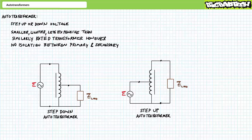An auto transformer is a special type of transformer with only one winding, and that single winding or portions of it serve as both primary and secondary. Like traditional transformers, auto transformers can step up or down applied voltage depending upon configuration. The principal advantage is that compared to a similarly rated traditional transformer, auto transformers are smaller, lighter, and less expensive. The disadvantage is that being constructed with a single winding, the primary and secondary are not electrically isolated, so an auto transformer cannot be used in applications requiring electrical isolation between systems.